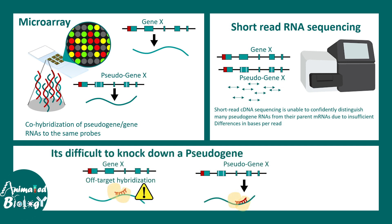It's also difficult to knock down pseudogenes. If you want to understand the function of a pseudogene, you have to knock it out or knock it down. If you design a siRNA complex to target the pseudogene, you would also non-specifically target the corresponding gene. Off-targeting would be a huge issue and you cannot determine what the function of the pseudogene is. These days, CRISPR-Cas9-based techniques are a bit better for studying pseudogenes and their function.